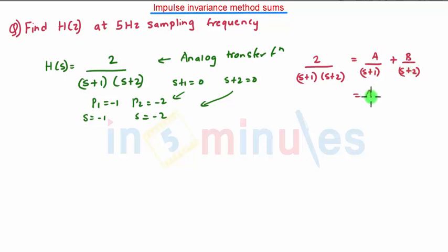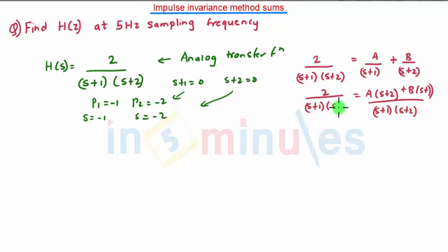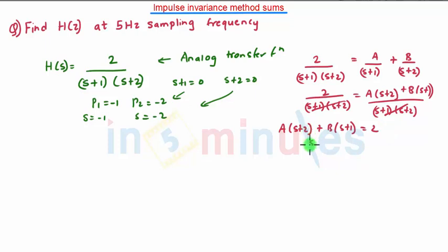We will cross multiply both terms. We get A(s+2) plus B(s+1) all over (s+1)(s+2), which is equivalent to 2 divided by (s+1)(s+2). The denominator gets cancelled, so we are left with A(s+2) + B(s+1) = 2. Now we find the values of A and B. Substituting s = minus 1, the B term becomes zero, and A(minus 1 + 2) = A = 2. So A equals 2.